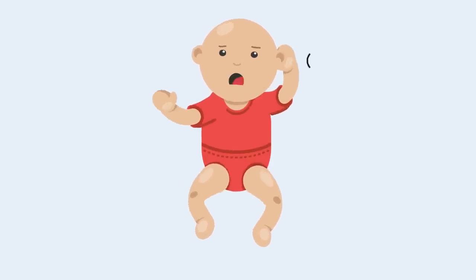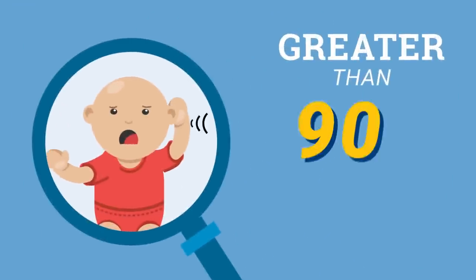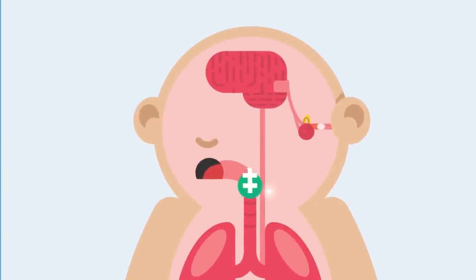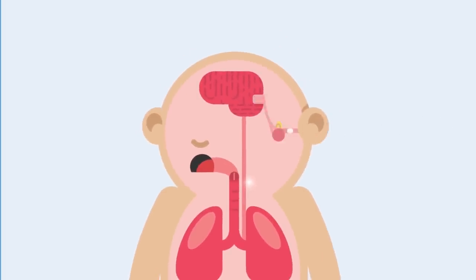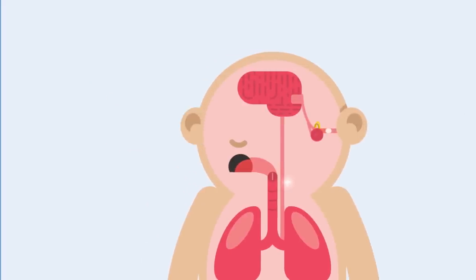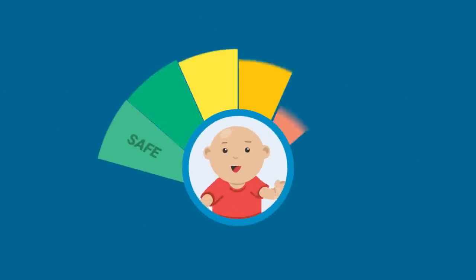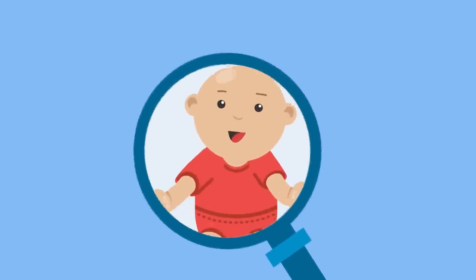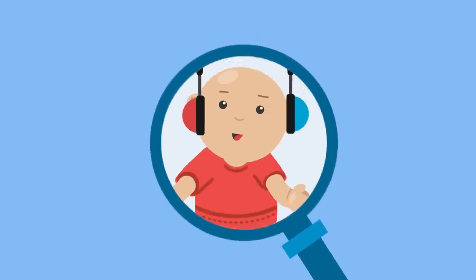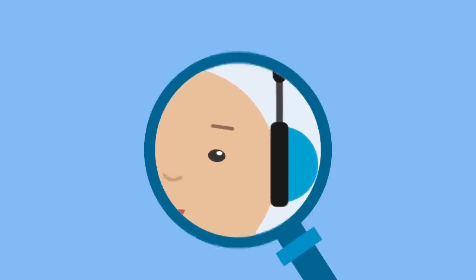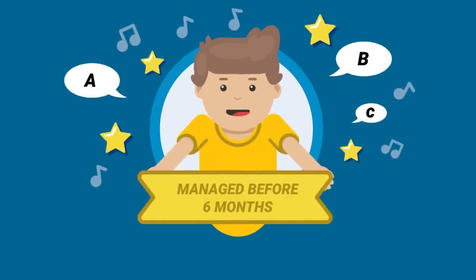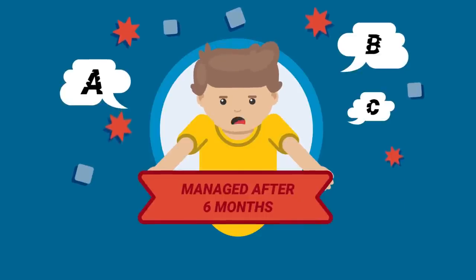Management of the deaf child: children with profound hearing loss greater than 90 dB or total deafness fail to develop speech and have often been termed deaf and mute. However, these children have no defect in their speech-producing apparatus — the main defect is deafness. The period from birth to five years is critical for the development of speech and language. Children whose hearing loss was identified and managed before six months of age had higher vocabulary scores and better language skills than those diagnosed after six months.